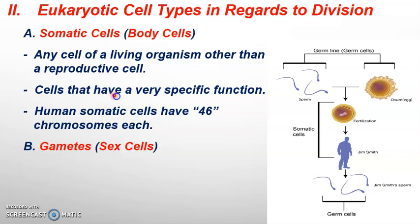These cells generally have a very specific function as they become specialized as you develop through fetal development. Cells will become skin cells, liver cells, heart cells, and they'll take on a very specific function overall. In regards to humans, what I want you to remember is that human somatic cells will have 46 total chromosomes each.